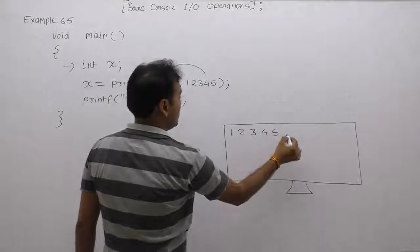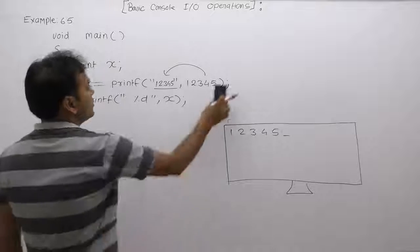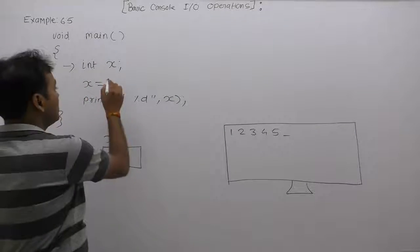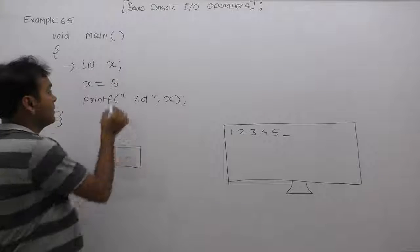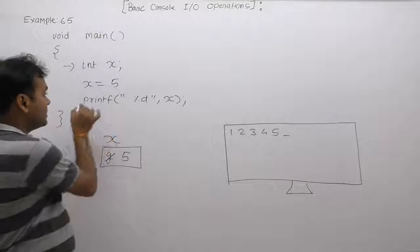Then it will return the number of displayed symbols. Total number of digits are five, therefore it will return value as 5. Five is assigned inside variable x, therefore value of x becomes 5.